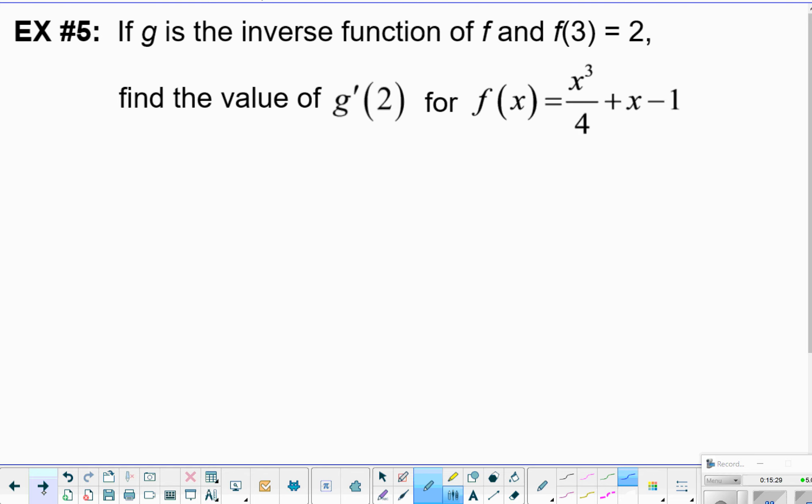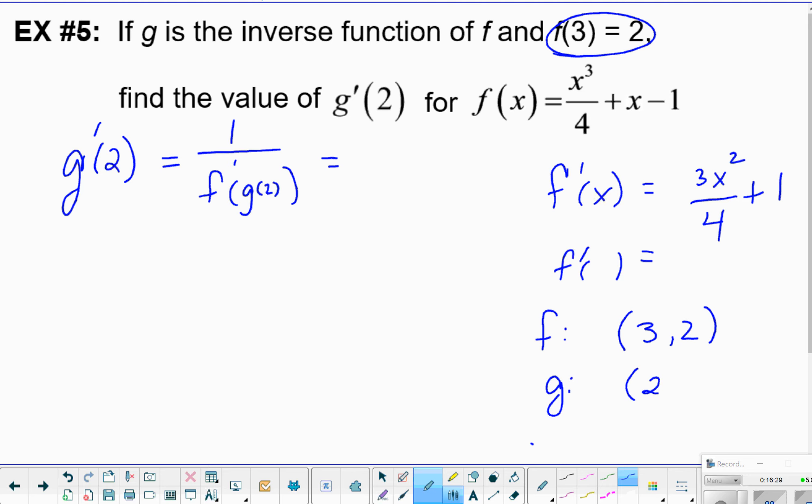What's this one say? If g is the inverse function of f, and f of 3 equals 2, find the value g prime of 2 for this function. Alright? So let's go into g prime of 2 is equal to 1 over f prime of g of 2. We need an f prime, don't we? f prime. I would bring down 3. x goes to the second. 3 fourths plus 1 is my derivative. I need to know where I'm evaluating that at, don't I? Alright. If I know the original function for f, I have the ordered pair put in 3, get out 2. Then g, the inverse, has the ordered pair put in 2, get out 3. These are the ordered pairs, right?